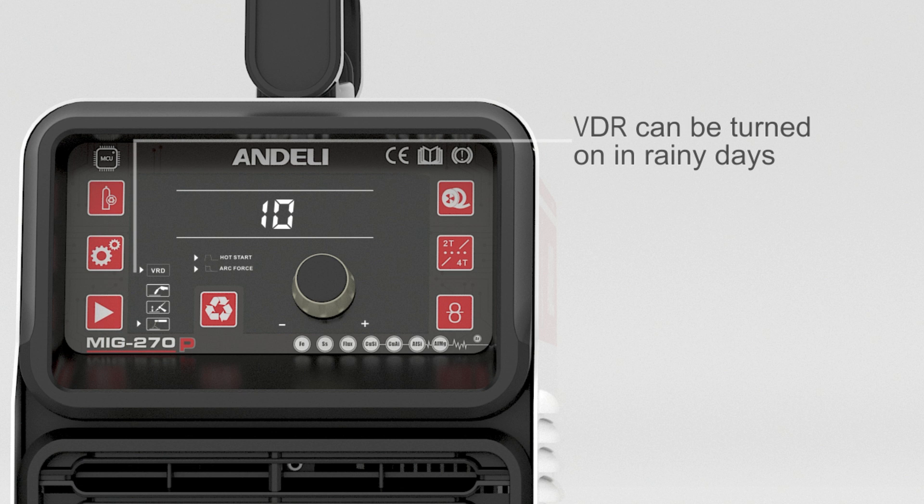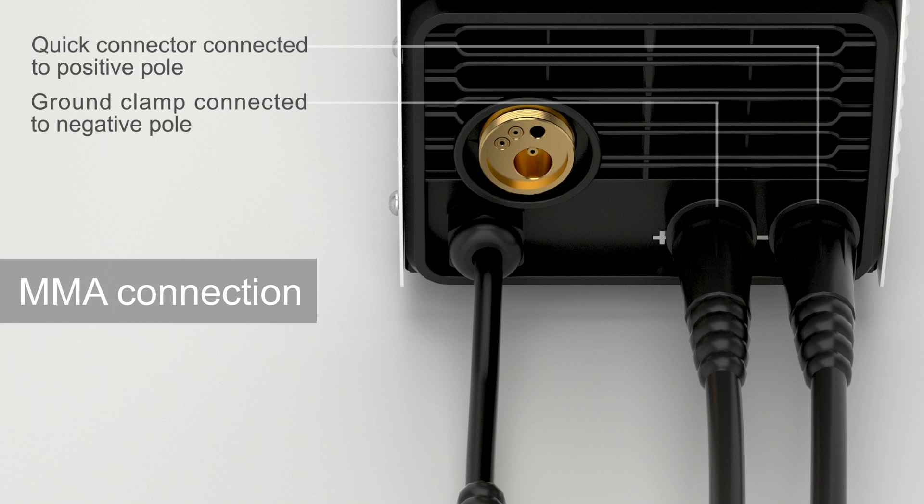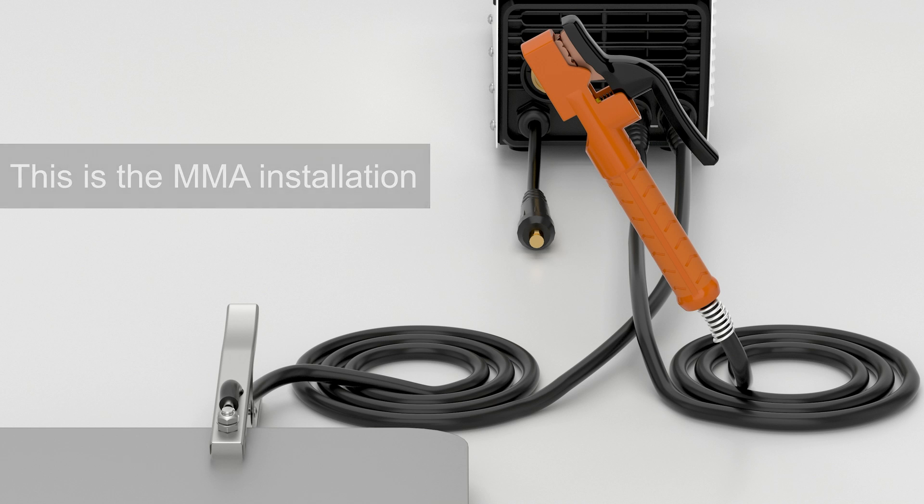VDR can be turned on in rainy days. MMA connection: ground clamp connected to negative pole, quick connector connected to positive pole. This is the MMA installation.